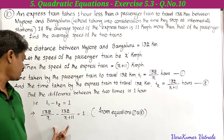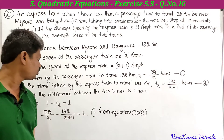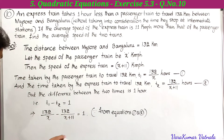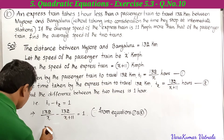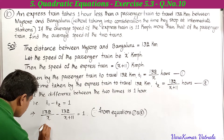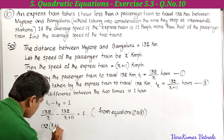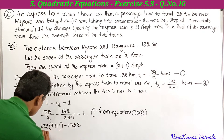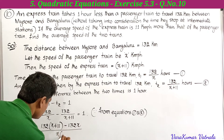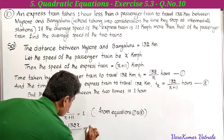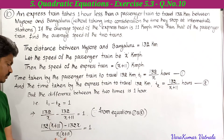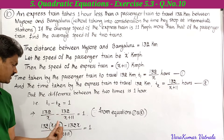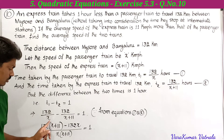From equations 1 and 2, t1 equals 132 by x and t2 equals 132 by (x plus 11), so substituting: 132 by x minus 132 by (x plus 11) equals 1. Finding the LCM, which is x times (x plus 11), we get: 132(x plus 11) minus 132x all over x(x plus 11) equals 1.